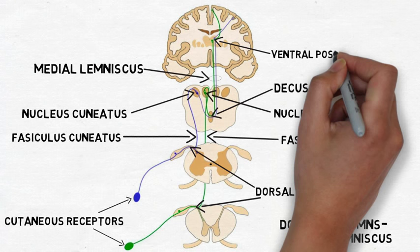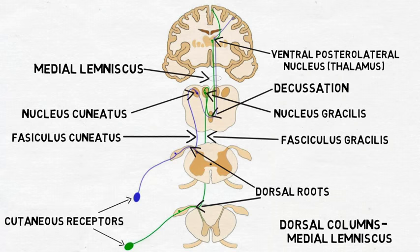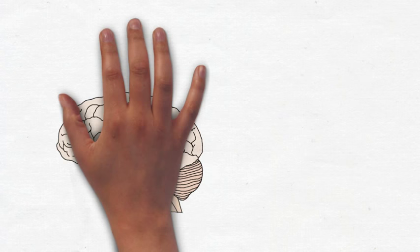A third part of the pathway arises from the thalamus and travels up to an area of the cortex called the postcentral gyrus, which contains the main sensory area for touch in the brain, the somatosensory cortex.